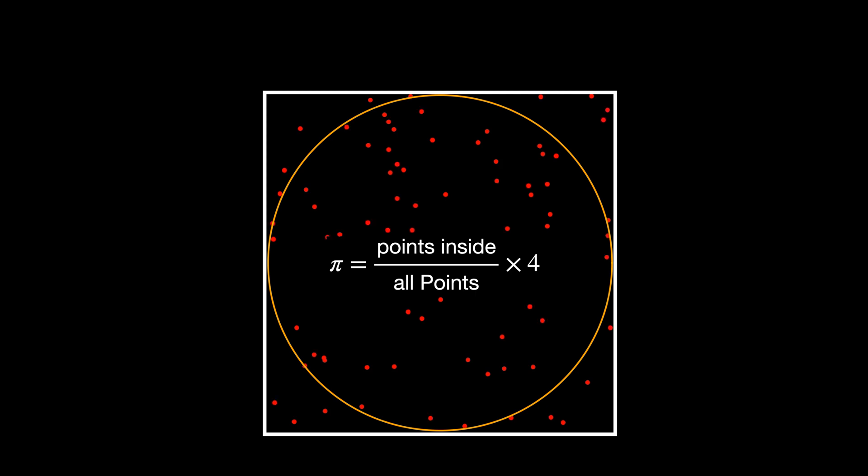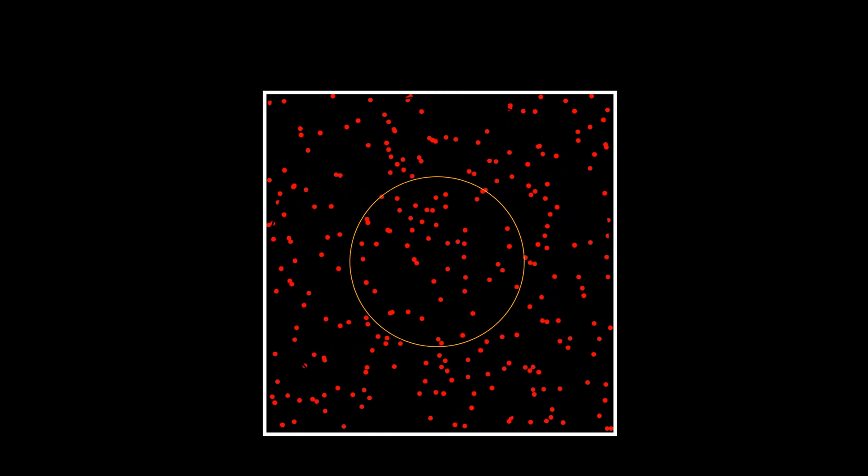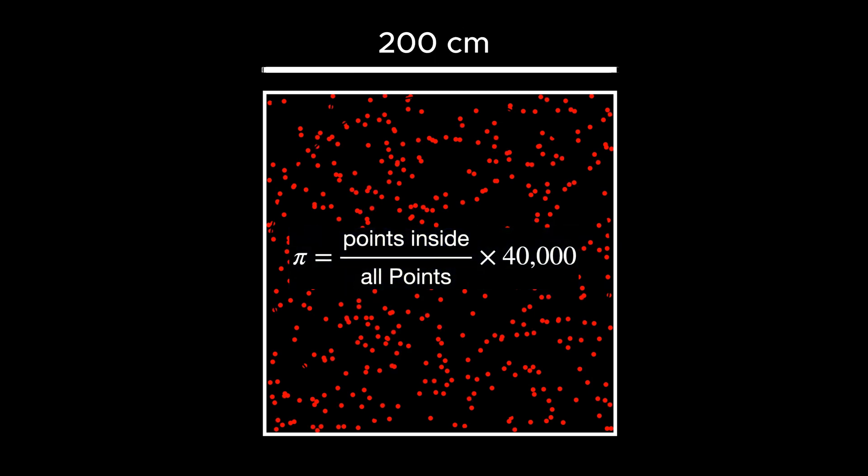To imagine the problem, let's remember how we estimated the value of pi. Let's assume for some reason, the sides of the square had to be 200 cm instead of just 2 cm. Then, most of the random points would fall outside of the circle, and we end up with a very poor estimation of pi.